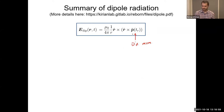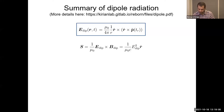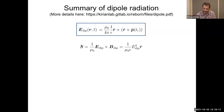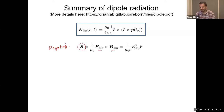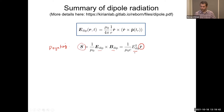Ultimately we want to know what we measure, which is the intensity at the detector. To get the intensity we need the Poynting vector S = (1/μ₀) E × B. The Poynting vector points from the origin to the detector in the r̂ direction. Since B was proportional to E, you get a factor of E squared, plus a factor of 1/c from the expression for B. The Poynting vector is the power per area; we normally integrate it over some period of time and over the detector area.